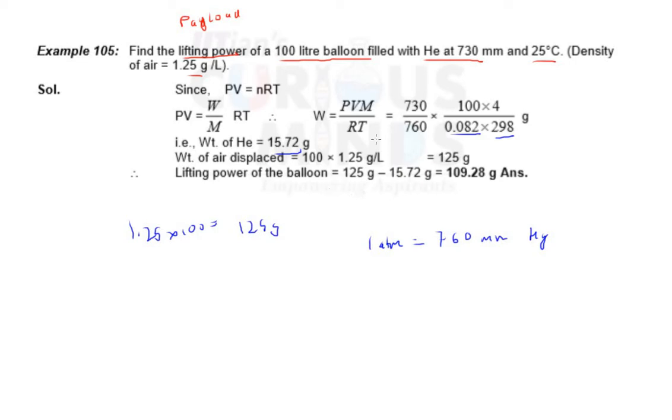So 125 grams is the weight of air which was there, displaced by the lighter gas helium. That's why the balloon rises up. Payload is always positive for a balloon to rise. Weight of the air displaced is 125 minus 15.72, the lighter gas weight is helium, so the answer is 109.28 grams. This is the payload, this is the lifting power of the balloon.